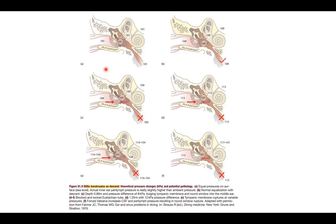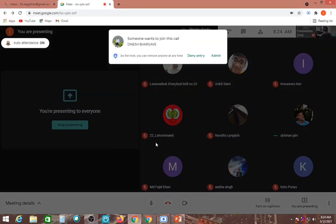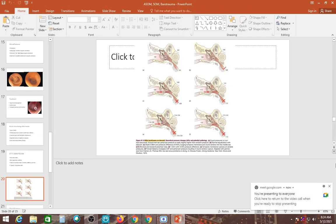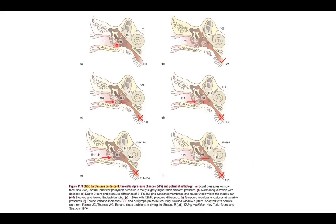The pressure diagram illustrates this: in the first picture, pressure (101) is equal in the external air, middle ear, and Eustachian tube — a normal condition. When the patient descends in flight or dives deep sea, external pressure increases, but normally pressure is transmitted through the Eustachian tube and normalized across all compartments.